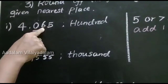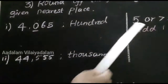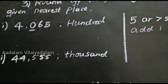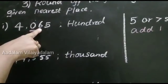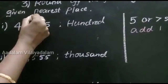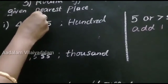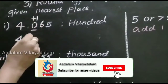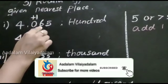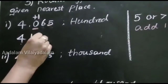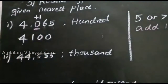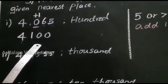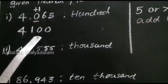If the digit is 5 or greater than 5, you add one number to the corresponding 100 digit. Here, 6 is greater than 5, so you add one number. 0 plus 1, the answer is 1. Remaining digits, we put 0. So 4100 is the answer. The nearest round off value of 4065 is 4100.